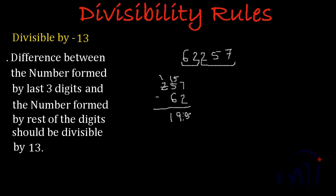So according to this rule, if this 195 is divisible by 13, this 62,257 will also be divisible by 13. So let me try and see if 195 is divisible by 13 or not.